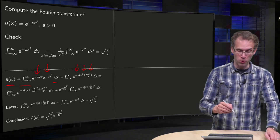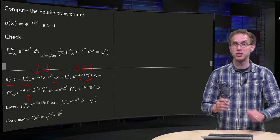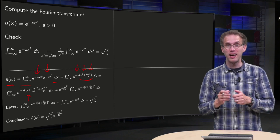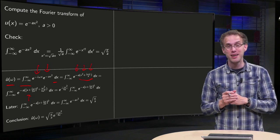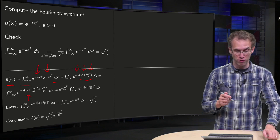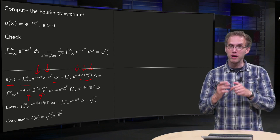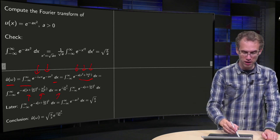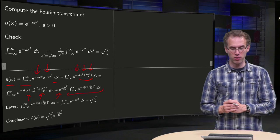Then we can complete the square for this one. So x² + iωx/a becomes (x + iω/2a)², and then you have to subtract i²ω²/(2a)², so you subtract minus ω²/(4a²), which means you add ω²/(4a²) — that's this part over here. This ω²/(4a²) does not depend on x, so you can take it in front of the integral, multiplied by minus a and taken in front, and then you have this integral left.